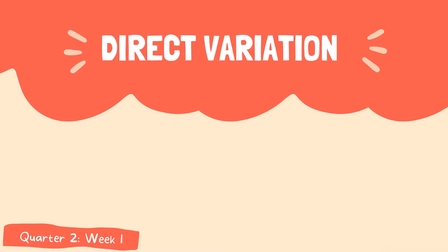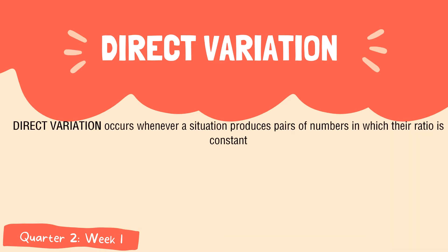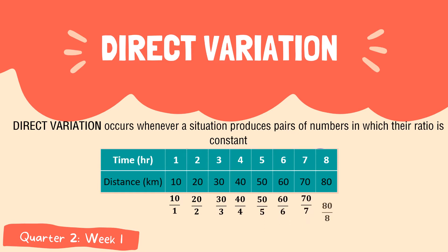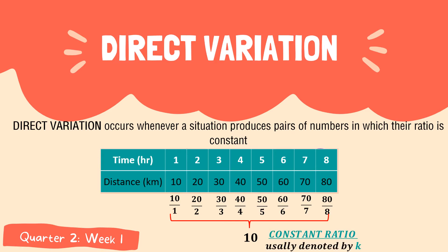Direct variation occurs whenever a situation produces a pair of numbers in which their ratio is constant. If you are going to get the ratio of each pair of numbers, it has the same or equal ratio, which is equal to 10. And this 10 is what we call the constant ratio, usually denoted by the letter k.